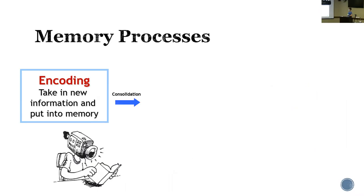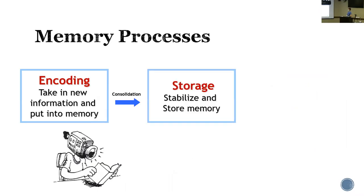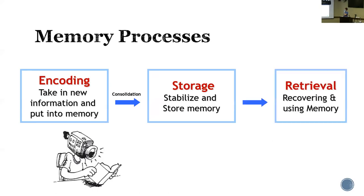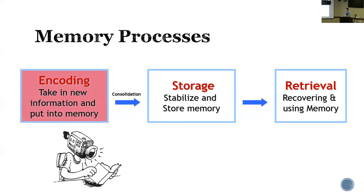Memory processing has three processes in total. First is encoding — that's when we take new information and put it into memory. After consolidation, the second process is storage — that's when we stabilize and store our memory. The last step is retrieval — we recover and try to use that memory.